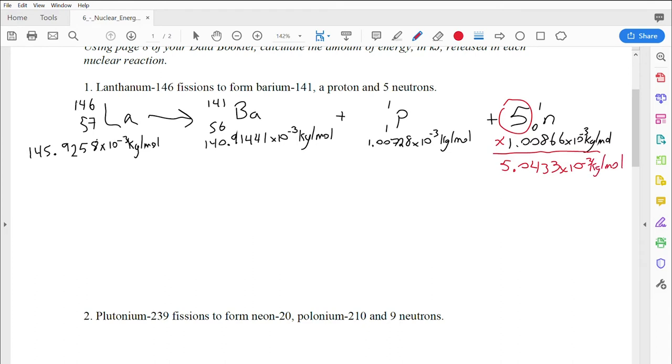Into my calculator, that's going to give me a mass of 5.0433 times 10 to the negative 3 kilograms per mole. So we've got our masses all worked out, and any multiplication that needed to be done has been done.